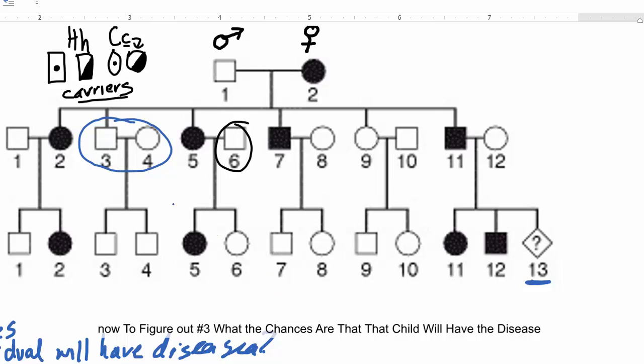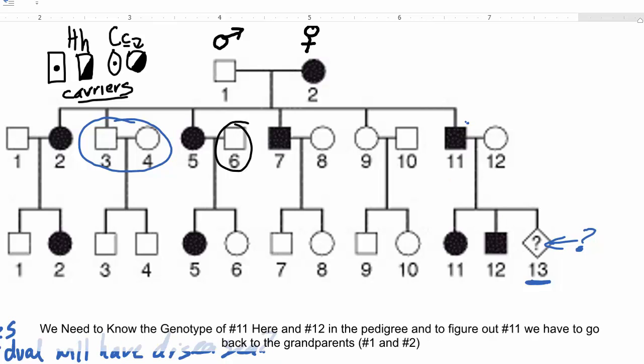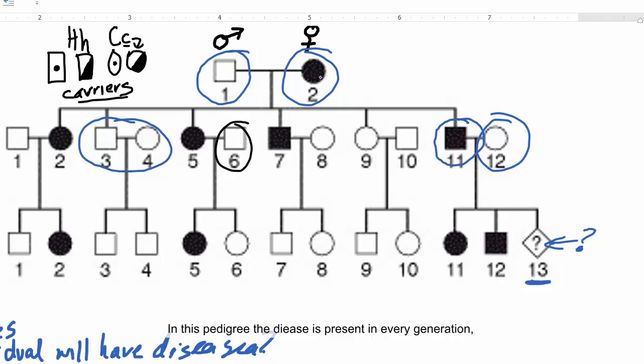Okay, so now to figure out number 13, what the chances are that that child will have the disease, we need to know the genotype of number 11 here and number 12. And to figure out that genotype, we have to go back here to number 2 and to number 1. And so what I want you to note here is that there's two possibilities if this is as we're thinking it is, because the disease is present in every single generation...